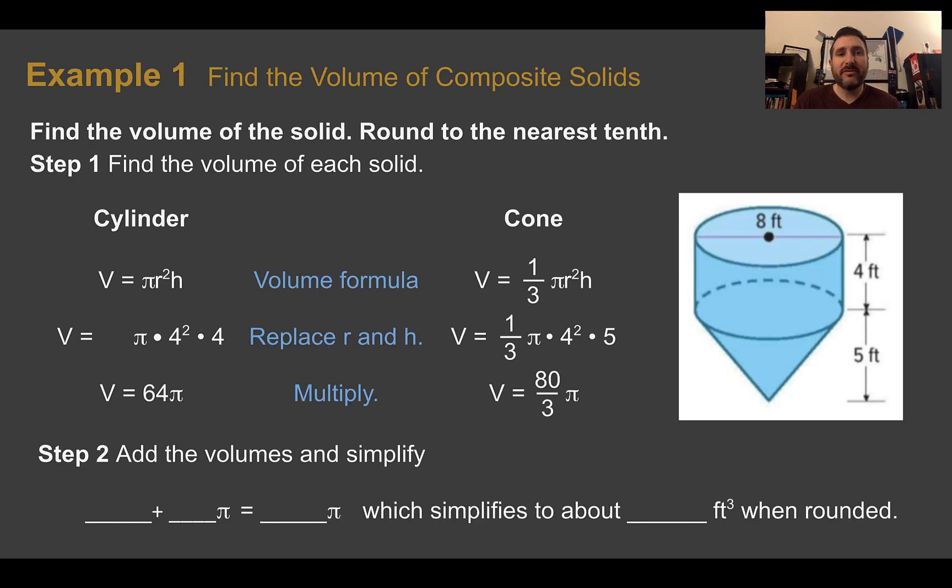Example one, find the volume of composite solids. Find the volume of the solid, round to the nearest tenth. So first, we need to find out the volume of each solid, and we need to really first tell what shapes we're decomposing it into. So I have a cylinder, I can see that on the top, and then it's sitting on top of a cone. So I need those two formulas. Volume of a cylinder, volume of a cone.